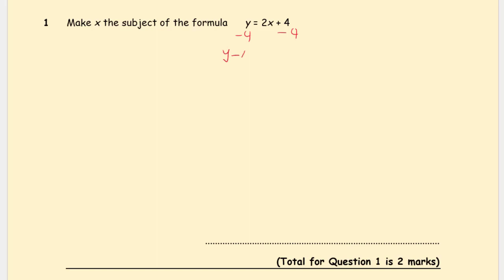First of all, we're going to start off by taking away 4 from both sides. That gives us y minus 4 is equal to 2x. Then we're going to divide by 2 because we want x on its own.